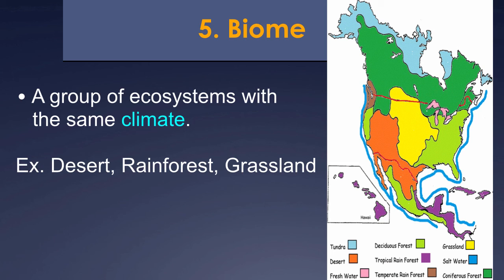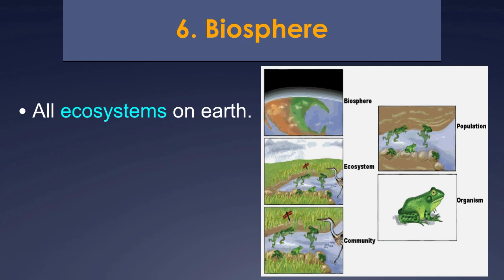The last grouping or level of organization is the biosphere. That is all the ecosystems on Earth — pretty much everything on Earth, the living and non-living parts, is the biosphere.